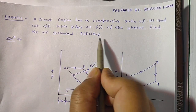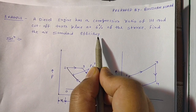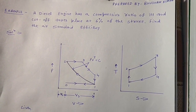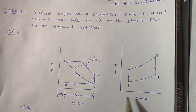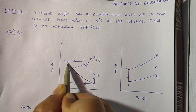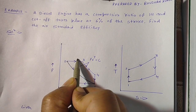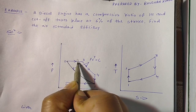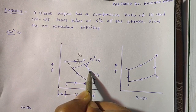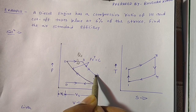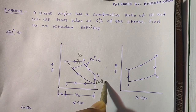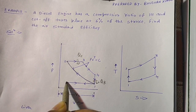We will calculate the air standard efficiency. This is the PV and TS diagram of the diesel cycle. Point 1 is suction, 1 to 2 is compression, 2 to 3 is heat supplied at constant pressure, 3 to 4 is expansion, 4 to 1 is heat rejection, and 1 to 0 is exhaust.